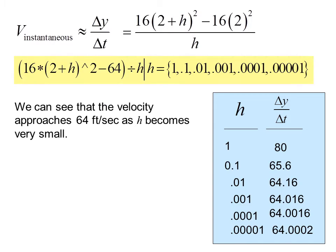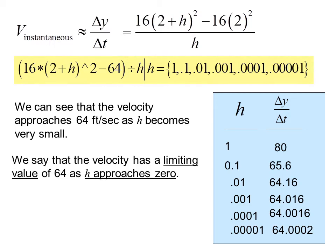So the velocity approaches 64 feet per second as h becomes very small. We say that the velocity has a limiting value of 64 as h approaches 0.